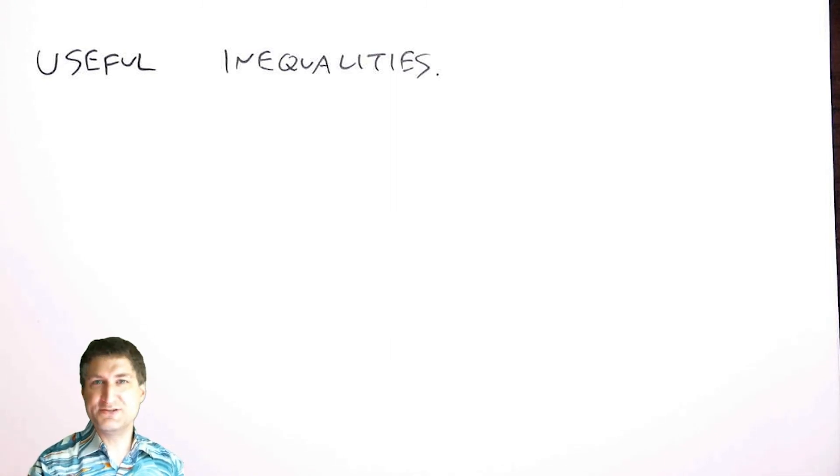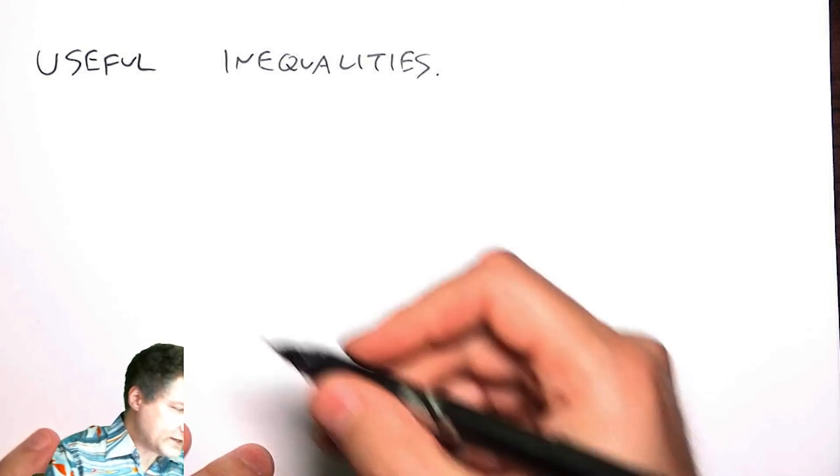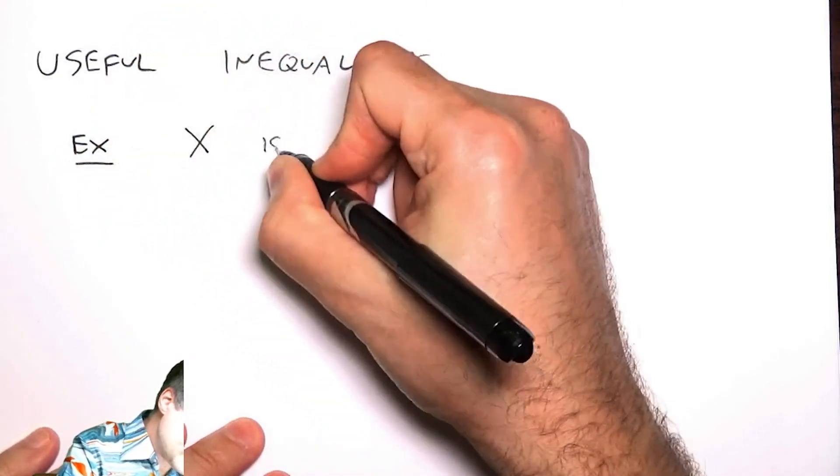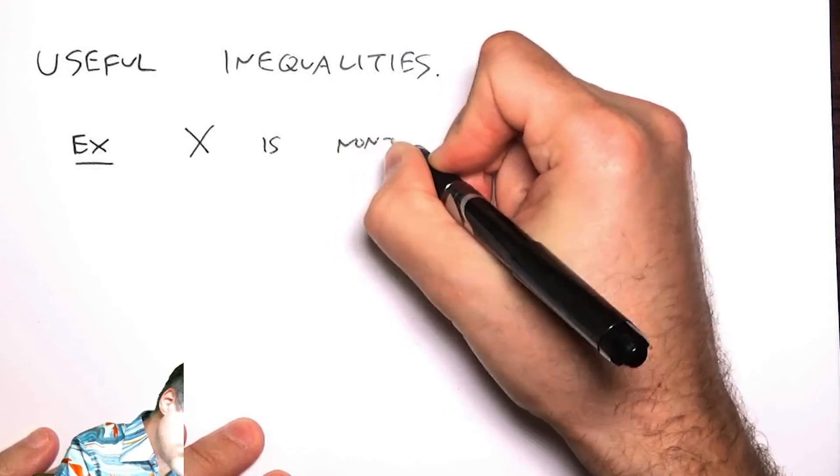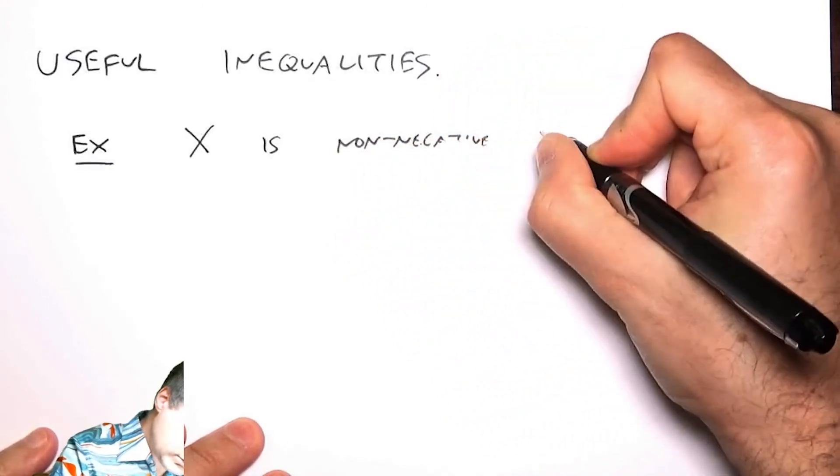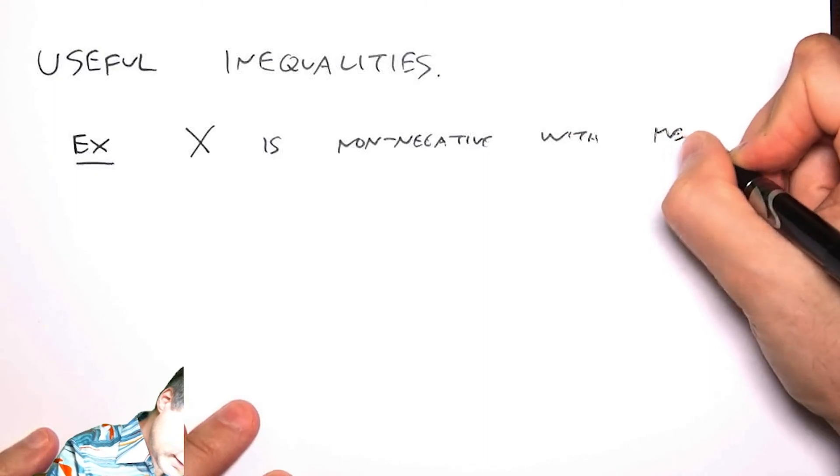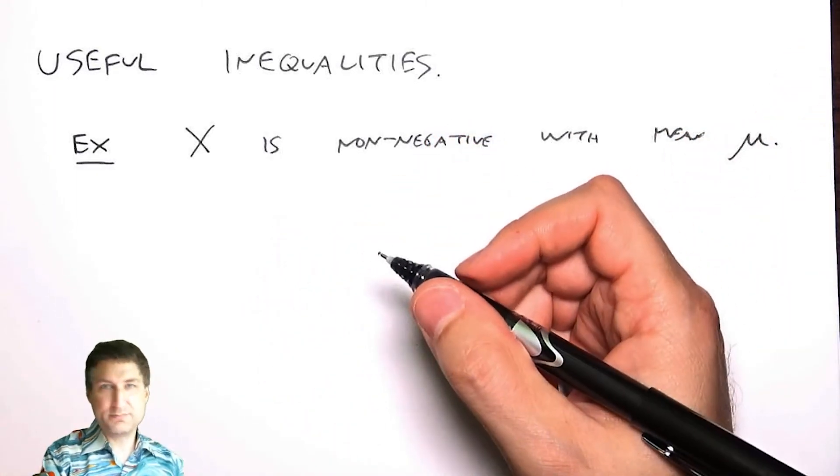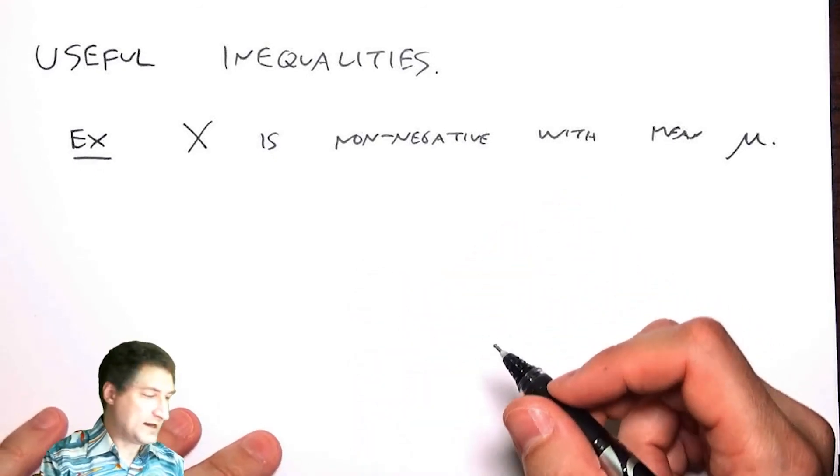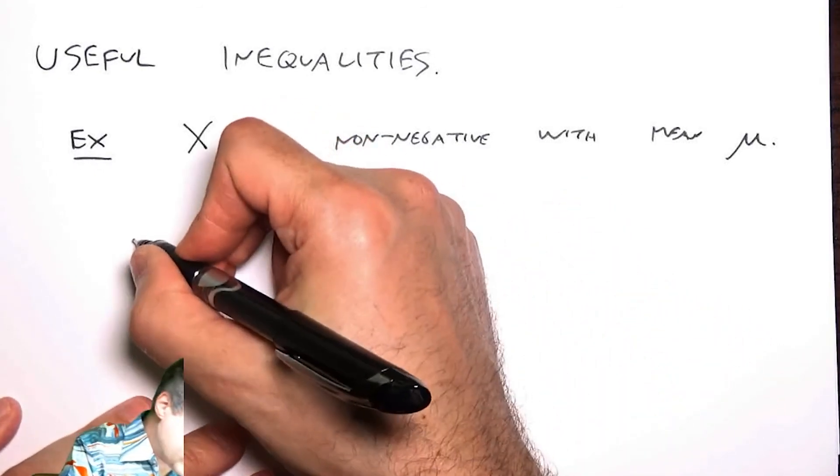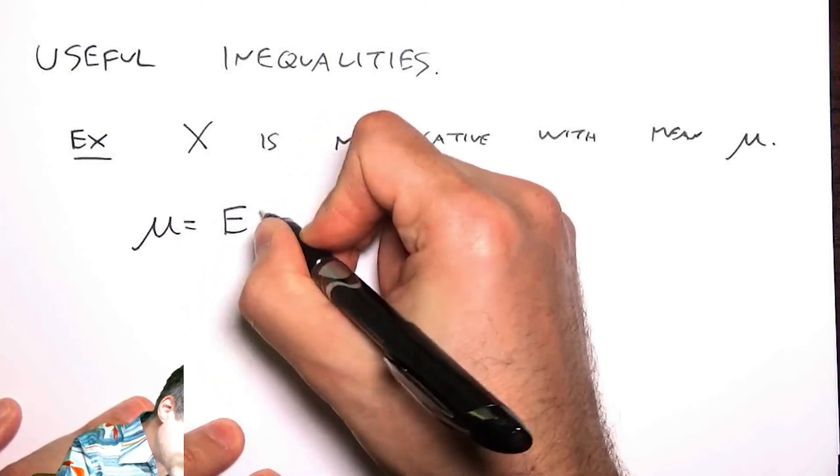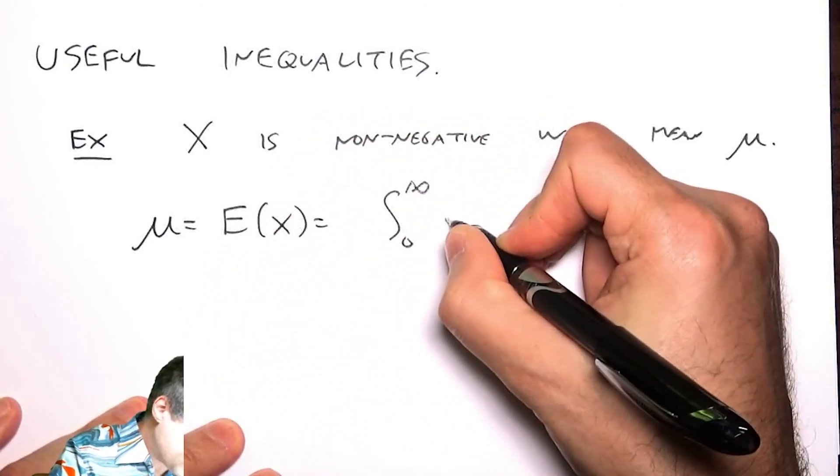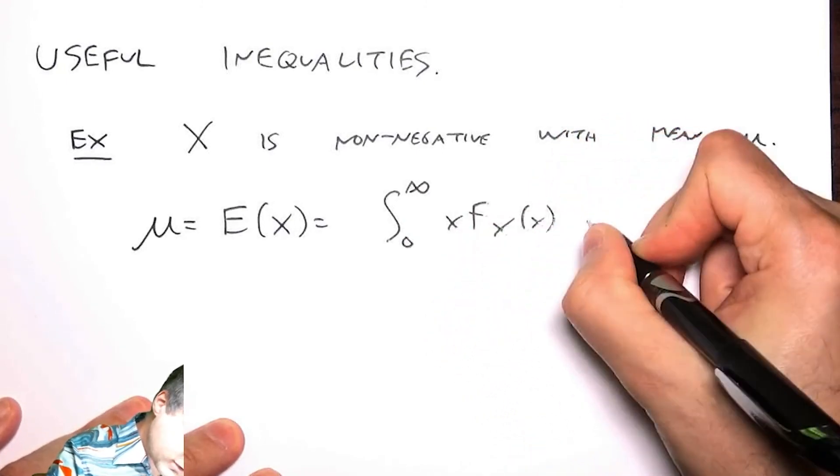For example, say we only knew that X is non-negative with mean μ. Can we say anything about probabilities involving X besides knowing the mean? Well, the mean is the expected value of X, which is in this case this integral, and I'm starting the integral at zero because I know that this is a positive random variable.